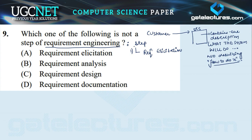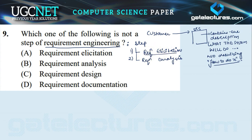For requirement elicitation, we use different methods like interviews and brainstorming sessions. In interviews, the purpose is to understand each other — meetings are arranged with customers. The requirement engineers act as mediators between the customer and the development team. They ask questions to the customers, prepare their notes, and then prepare the documentation.